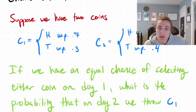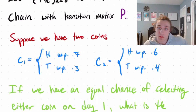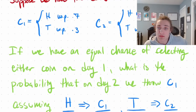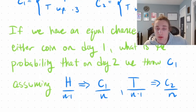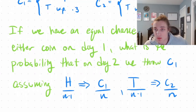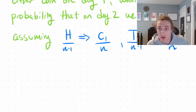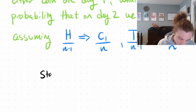Consider these two coins. We have coin 1 that throws heads with probability 0.7 and tails with probability 0.3. For coin 2, we throw heads with probability 0.6 and tails with probability 0.4. If we have an equal chance of selecting either coin on the first day, what is the probability that on the second day we throw coin 1? We assume that if we throw heads on the previous day, we throw coin 1 next, and if we throw tails, we throw coin 2.